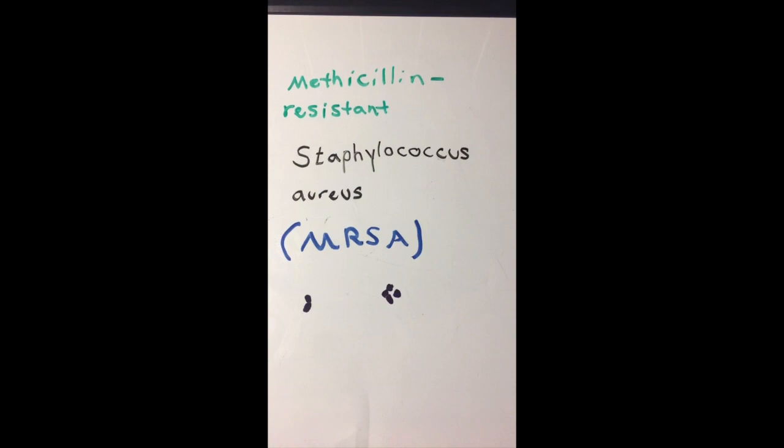MRSA, or methicillin-resistant Staphylococcus aureus, is a strain of Staphylococcus aureus that has acquired a certain gene that has given it resistance to antibiotics such as methicillin.